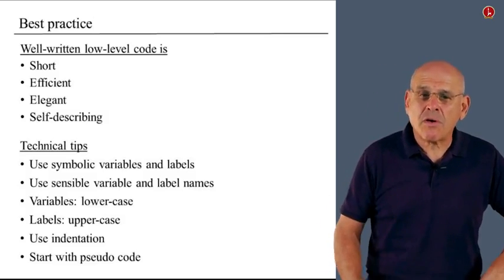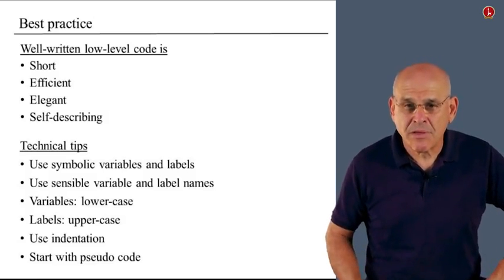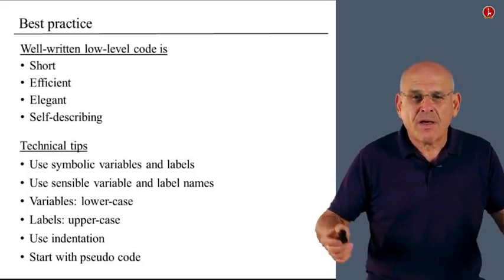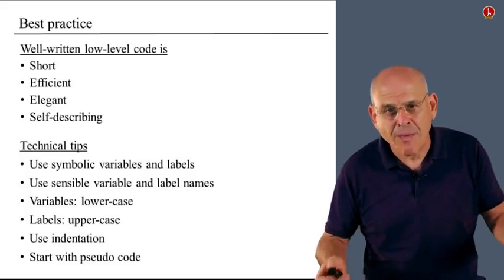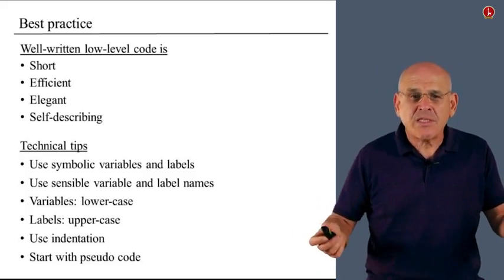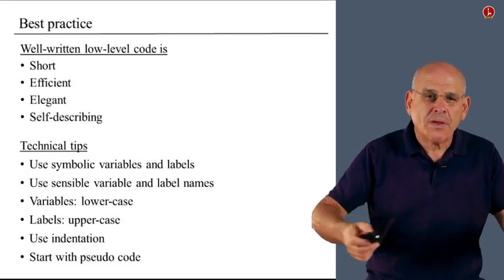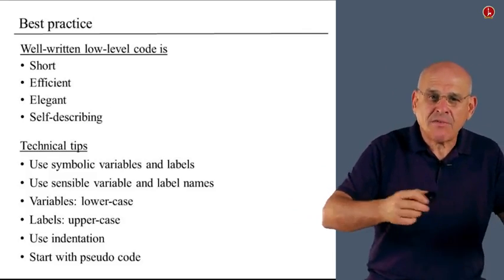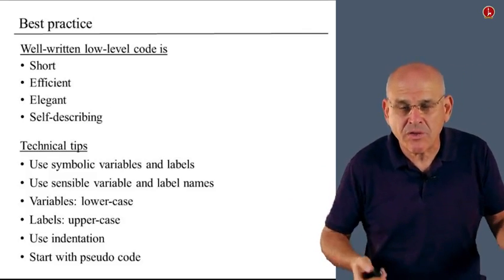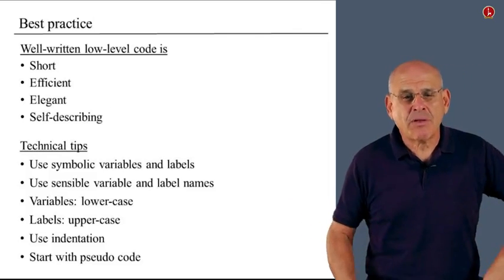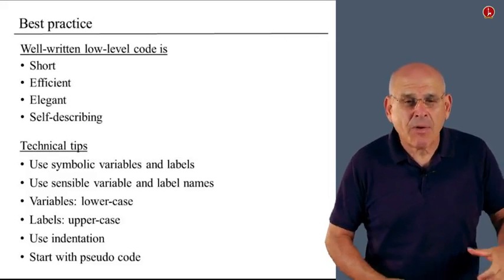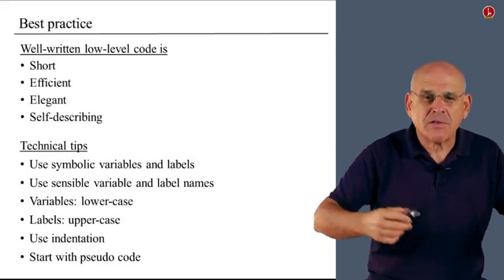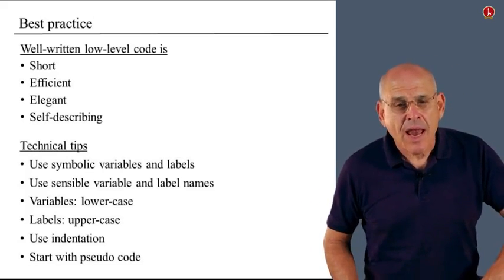When you invent your variables and your labels, as usual in programming, use sensible names. Don't make cryptic names like GU5, three ampersand or something like this. Use instead something like loop, end, stop, positive, negative. Depending on what is it that you want to do, try to use sensible label names. And likewise, variable names, use nice names like i, n, sum, count, and so on.